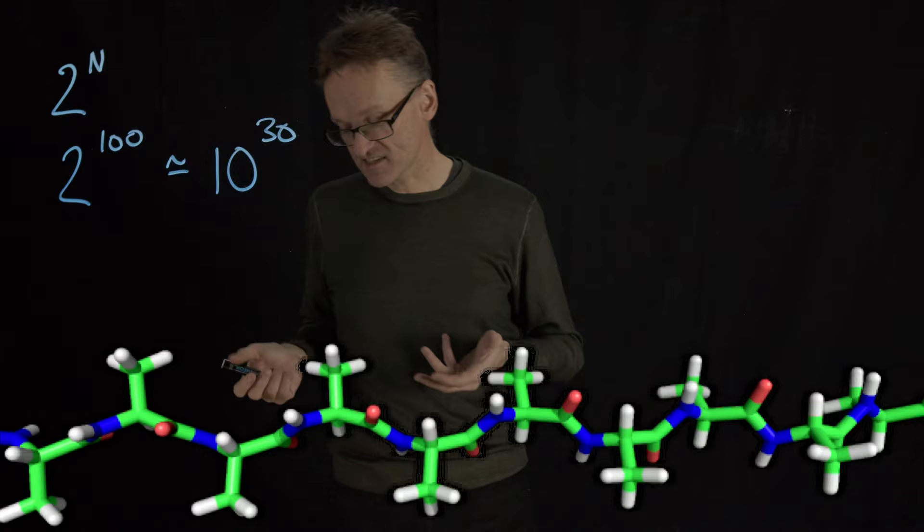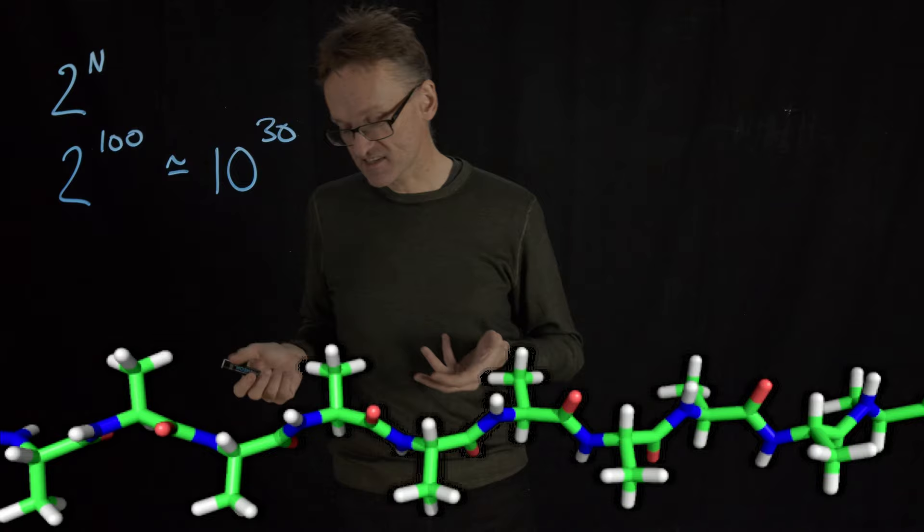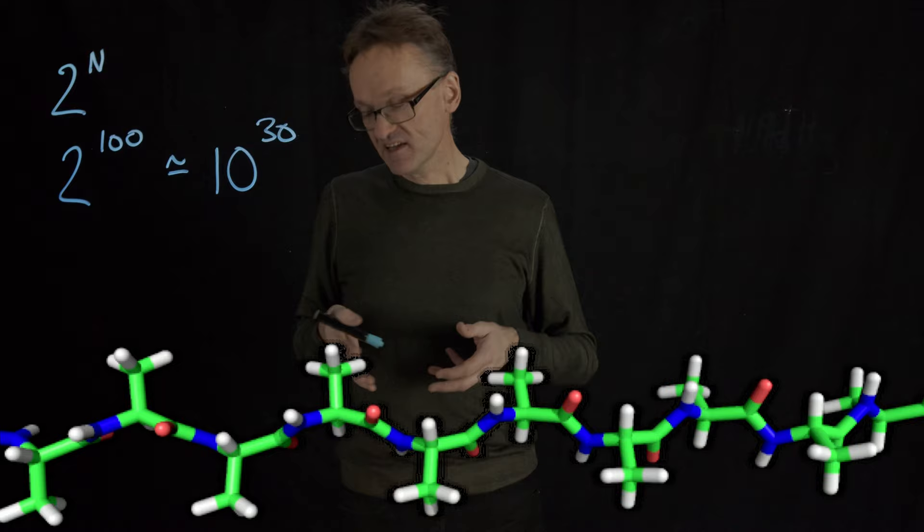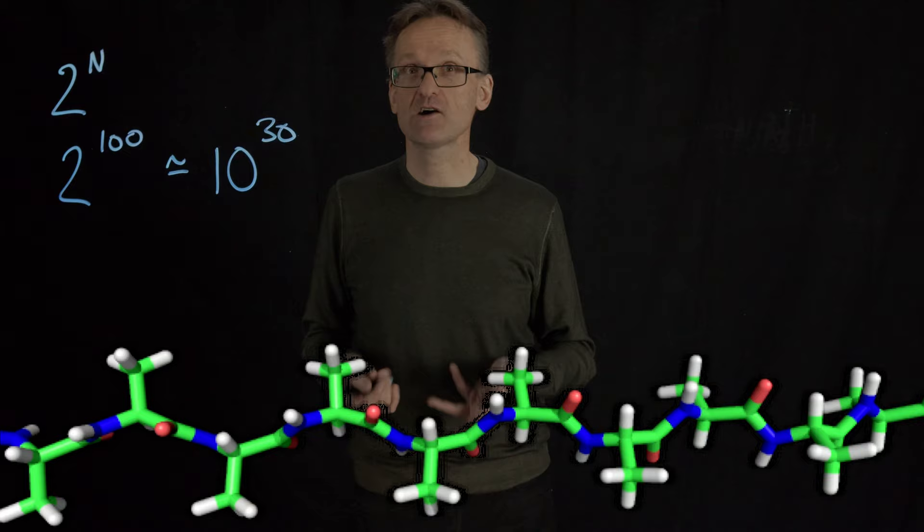So what Levinthal's paradox says is that we know that this chain finds the thermodynamic minimum. Christian Anfinsen proved that. And yet there's absolutely no way for the chain to test every single possible conformation. So how does it even find that conformation?